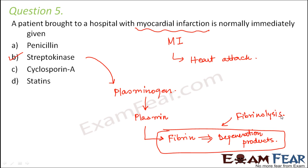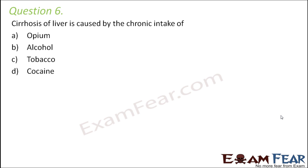If fibrinolysis takes place, blood clot-related disorders can be cured. During myocardial infarction, blood flow to the heart is blocked — blood accumulates and cannot move smoothly. Fibrinolysis breaks down fibrin polymers into degradation products. Plasmin performs this breakdown; plasminogen activates plasmin; and streptokinase activates plasminogen. Therefore, streptokinase must be immediately given to a patient suffering from MI.